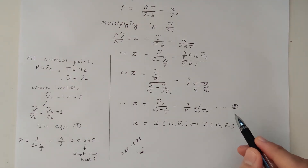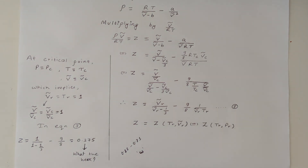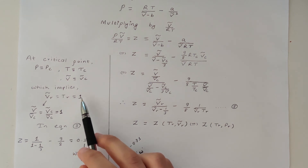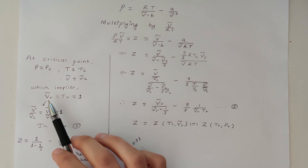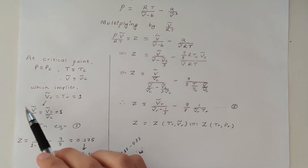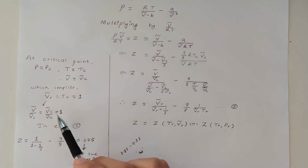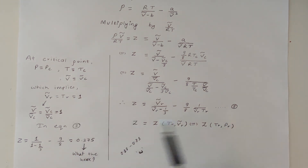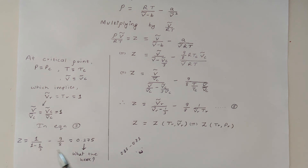Now let's see what happens at the critical point using this equation. At the critical point, the pressure, temperature, and volume of the fluid equal their critical values — Pc, Tc, and Vc — which means the reduced volume, reduced temperature, and reduced pressure are all equal to 1. Substituting a value of 1 into the equation gives us the compressibility factor Z at the critical point, which equals 0.375.